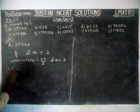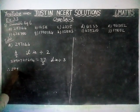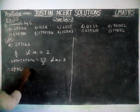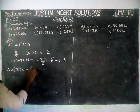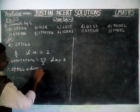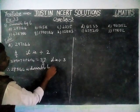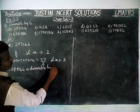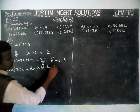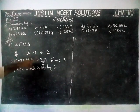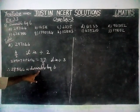Therefore, the given number is divisible by 6. The given number is divisible by both 2 and 3, therefore the given number is divisible by 6.